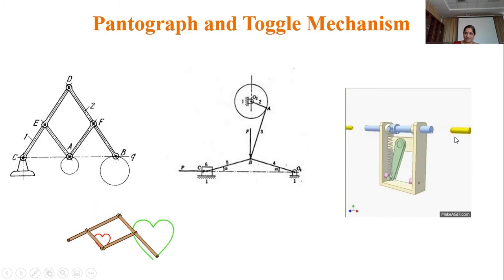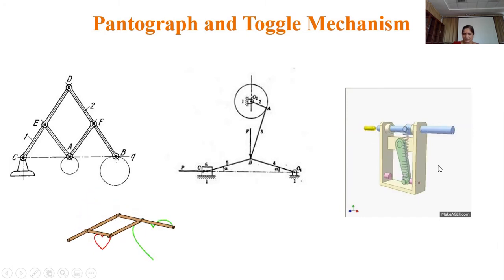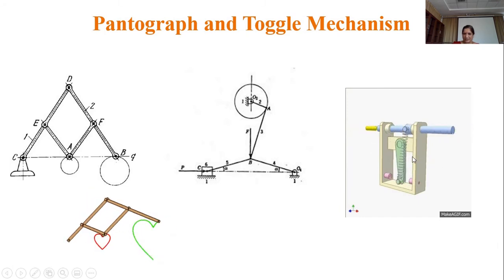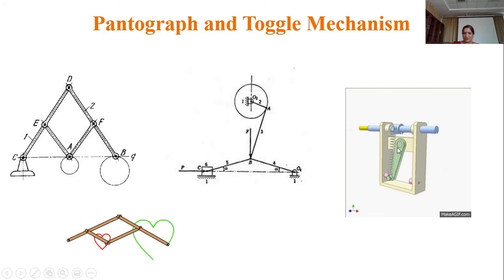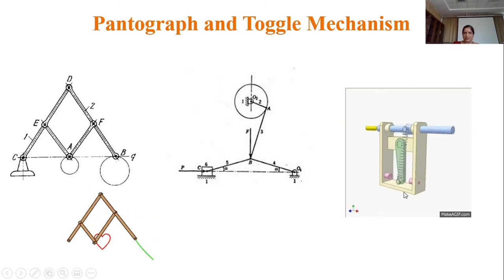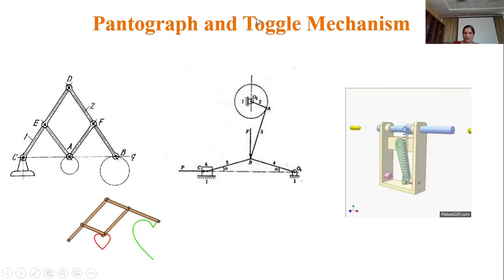Toggle mechanisms are used in toggle clamps, riveting machines, punch presses, stone crushers, and also in switches, circuit breakers, and other mechanisms where a snap action is required. The animation shows the rapid rising of force over a short distance, which is why the toggle mechanism is used in such applications.